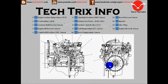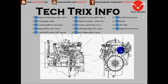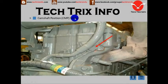Number six is the camshaft position sensor. The camshaft position sensor is in the rear of the engine. Here we have the camshaft position sensor located.